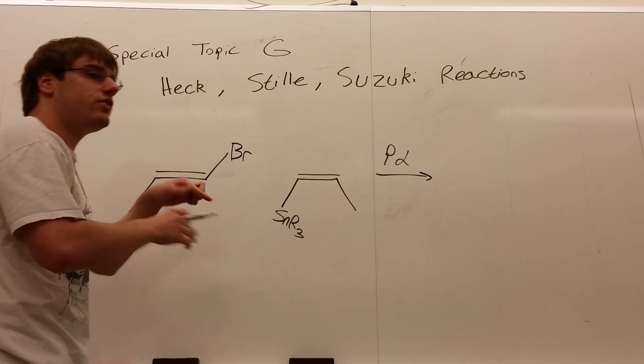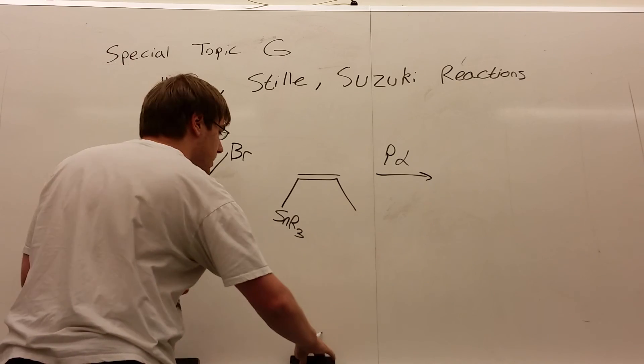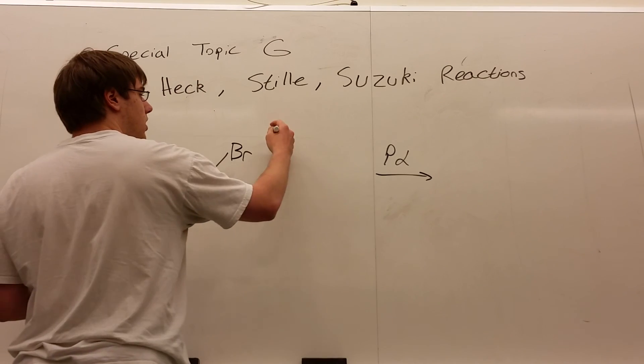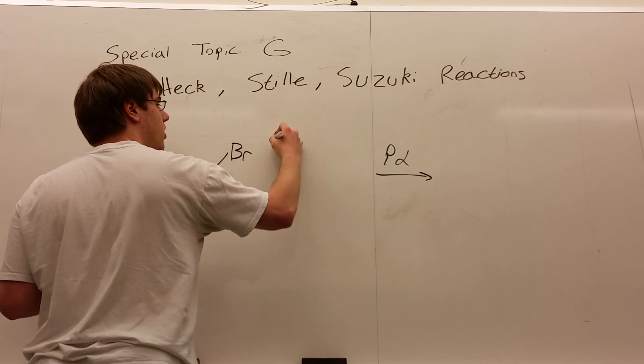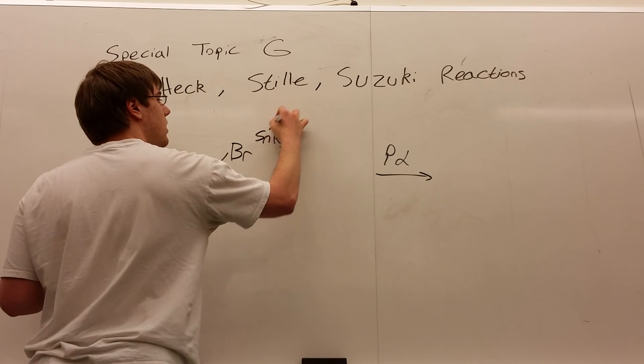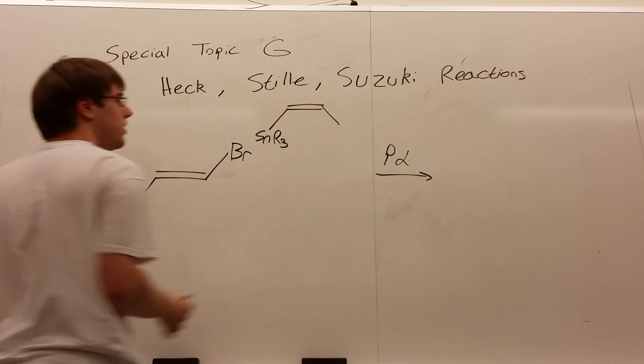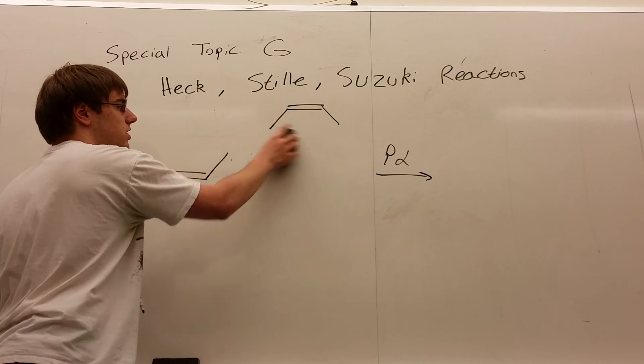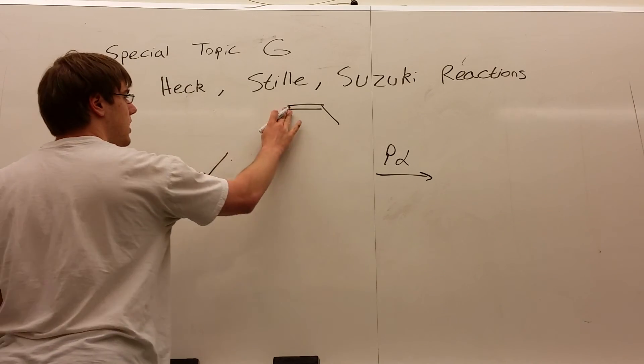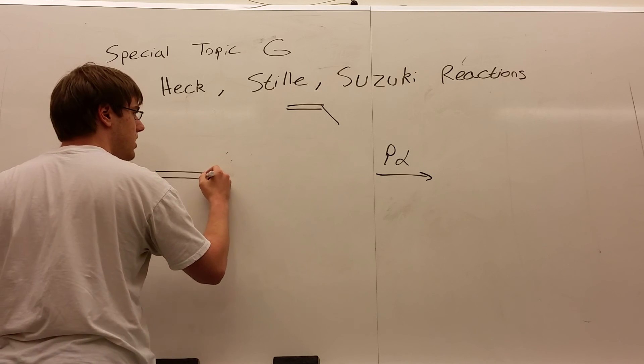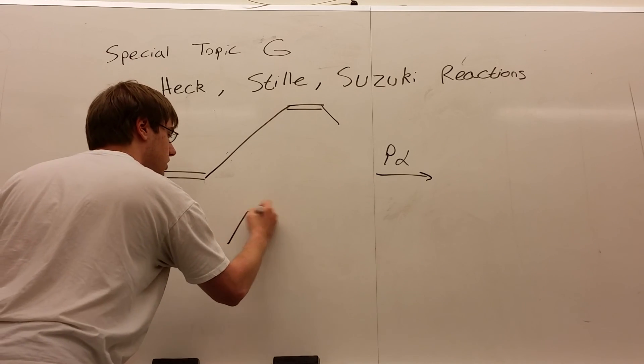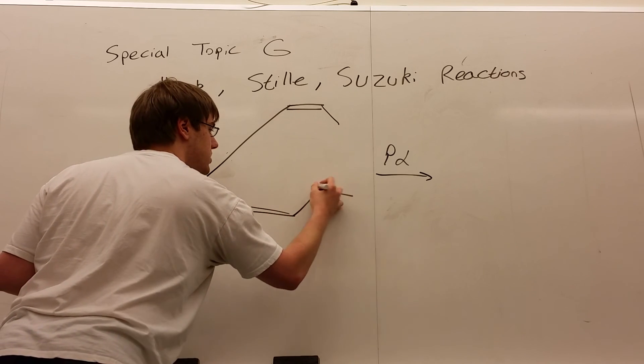Basically, it's kind of the same as what we were doing with the Heck, in the fact that you're just going to line these two double bonds up with the special group. So we have R3Sn, we have our cis double bond, and you're just going to erase the bromine, erase the tinR3, and connect the two double bonds to each other, like this. This looks kind of ugly. I can just draw it a little neater, but that's the general gist of the Stille as well.